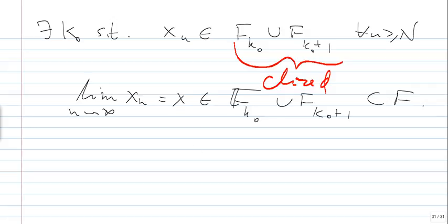What's amazing is that this set is closed because it's a union of two closed sets. So the limit of X_N equals X, which belongs to F_{K_0} union F_{K_0+1}, which is a subset of F. That's how you catch it. So I hope you enjoyed this lecture. This Egorov theorem is truly amazing, and with its applications we touch on Littlewood's principles, as well as Lusin's theorem and some extensions. Thank you for your attention.